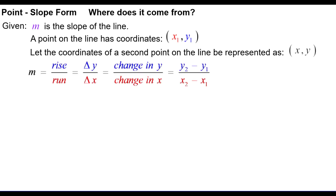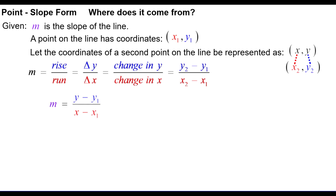Here is our slope formula. We are going to substitute: in place of x sub 2 and y sub 2, we put x in place of x sub 2, and plain y in place of y sub 2. We put in m for the slope and leave x sub 1 and y sub 1 alone, since those will be supplied to us. So here is what we get: m equals y minus y sub 1 over x minus x sub 1.